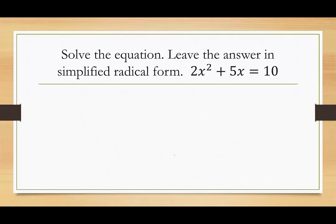Our next example: in order for the quadratic formula to work, we need the equation to equal 0. Right now I see it equals 10, so the first thing I want to do is subtract 10 from both sides. We don't want to label a, b, and c until we have this equal to 0. So we have 2x squared plus 5x minus 10 equals 0. You can do a quick check to see if it's factorable — I'm pretty sure it's not. Target product is negative 20, target sum is 5, I don't think that's going to work out for us.